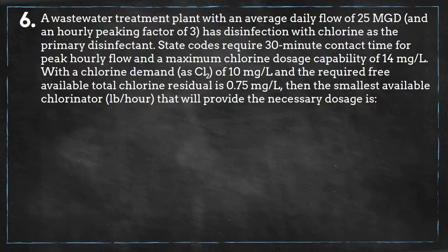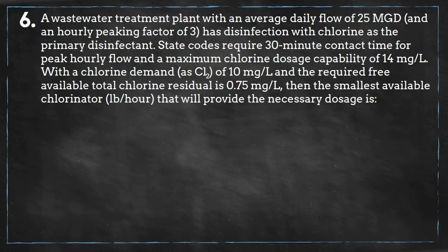A wastewater treatment plant with an average daily flow of 25 million gallons per day has disinfection with chlorine as the primary disinfectant. State codes require a 30-minute contact time for peak hourly flow and a maximum chlorine dosage capability of 14 milligrams per liter, with a chlorine demand of 10 milligrams per liter.